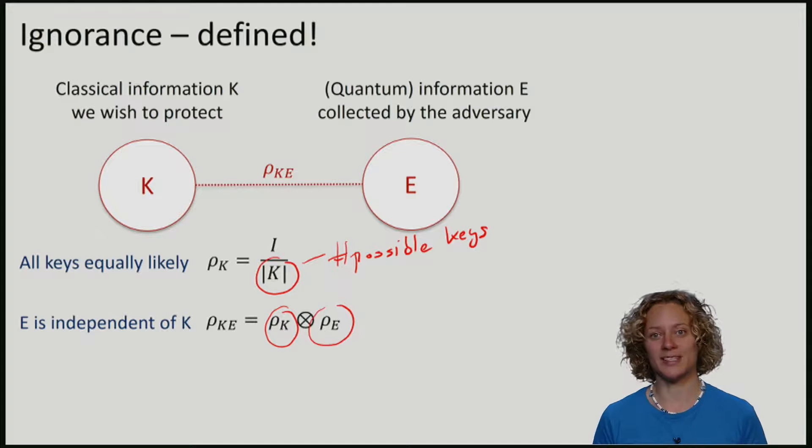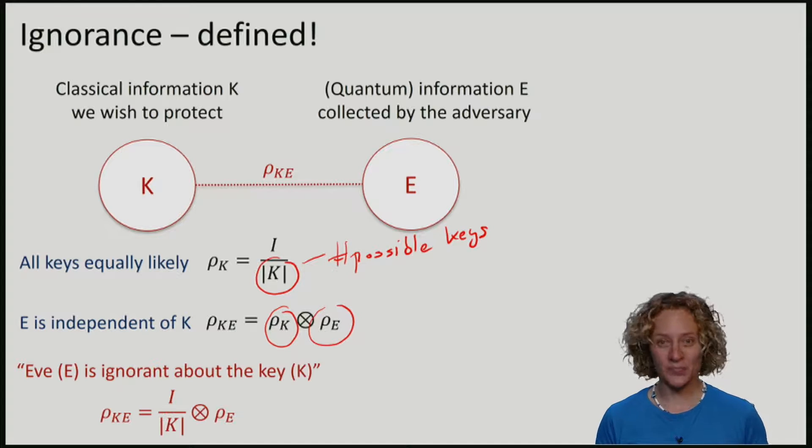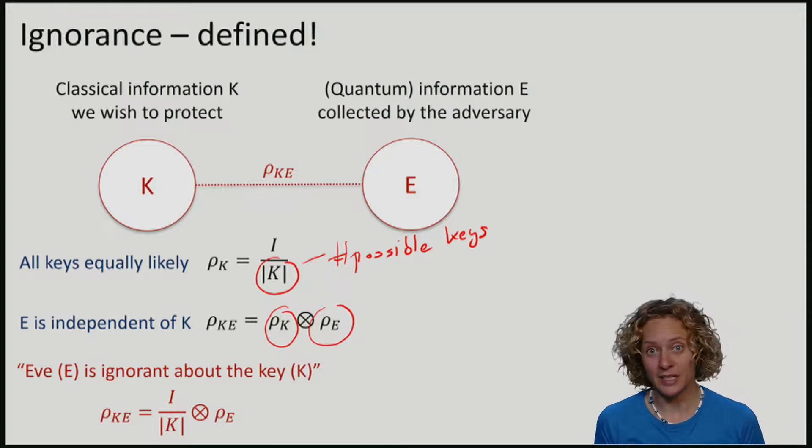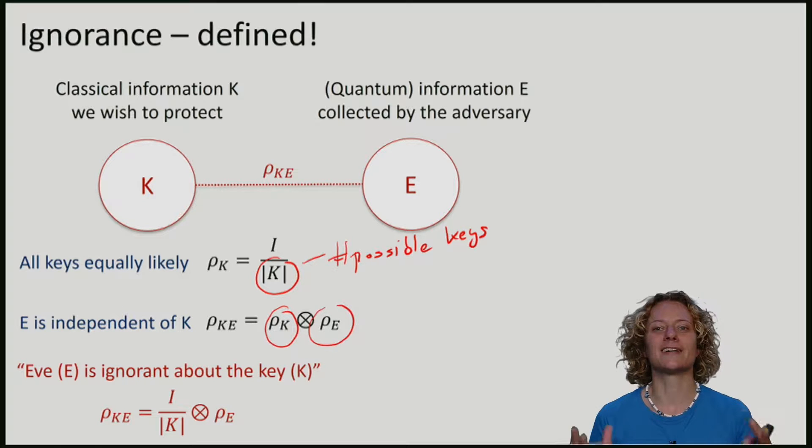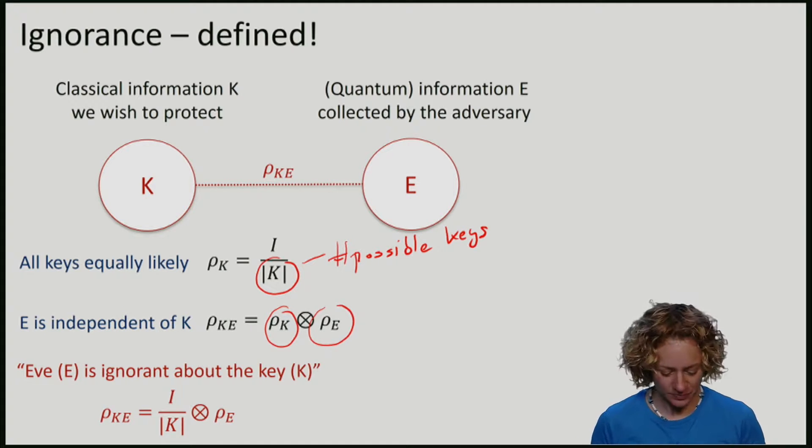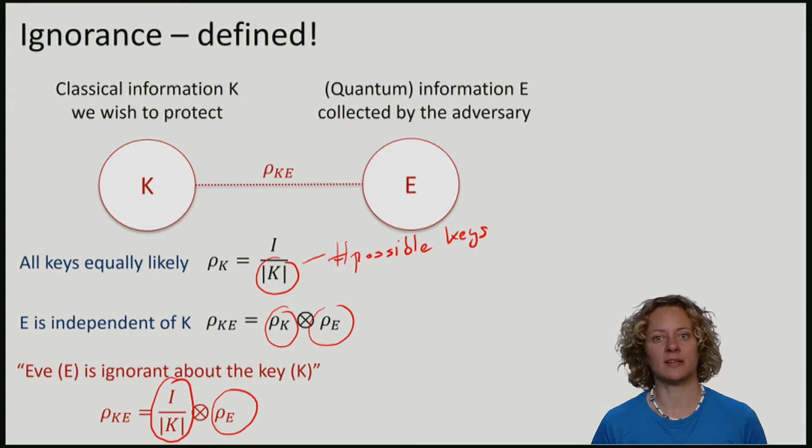If we put these things together, we then say that Eve, who holds register E, is ignorant about the key contained in the classical register K, if ρKE is equal to the maximally mixed state on K tensor some arbitrary state on E.